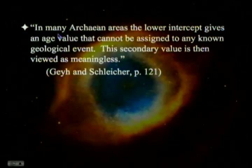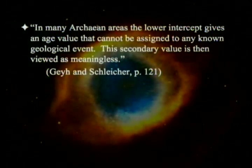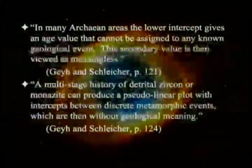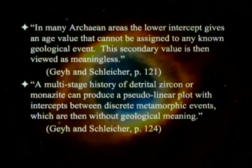If we were constantly getting an accurate number from the lower intercept, that would be disturbing from a short-age perspective. But as Guy and Schleicher note: in many Archean areas, the lower intercept gives an age that cannot be assigned to any known geological event, and this secondary value is then viewed as meaningless. As they say a few pages later, a multi-stage history of detrital zircon or monazite can produce a pseudo-linear plot with intercepts between discrete metamorphic events, which are then without geologic meaning.